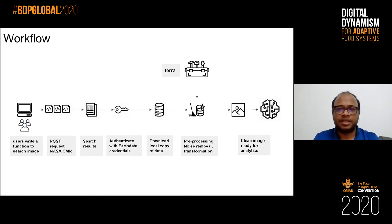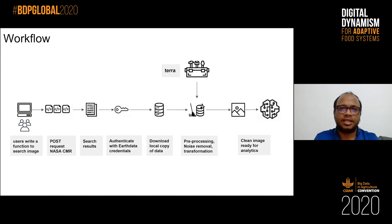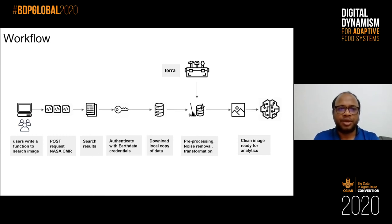When it gets a result, you have two options: you can see the results or download them. To download, you have to authenticate your user using the Earthdata credentials. Once you've done that, you can bring data in and start basic preprocessing — some kind of curve fitting, noise removal, cloud masking — and then take the data to your known workflow. Everything is happening in the backend so you don't have to worry about any of this. It's written mostly in R, with some functions written in C++.